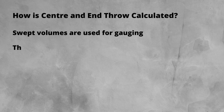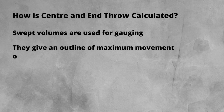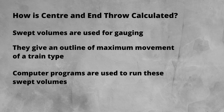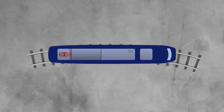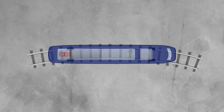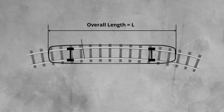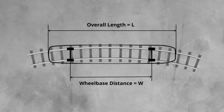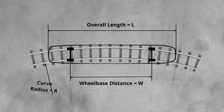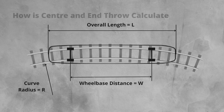This volume gives an outline of the maximum movement of a certain train type in any direction. Computer programs are used to run this against survey data of line-side structures. We can however use some simple equations to get an idea of our end and centre throw values. For the train we are going to look at, we need to know a few basic dimensions: firstly the overall length of the vehicle, and next the distance between the wheelbases or bogies on that type of train. As you can see, doing this for multiple train types is going to be a time-consuming activity, showing why gauging computer programs are very well suited to this type of analysis. The last thing we need is the radius of the curve.